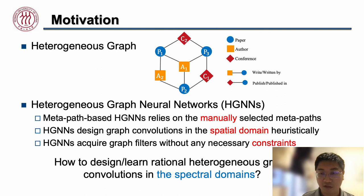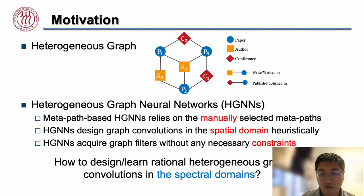Firstly, the efficiency of metapath-based methods heavily relies on manually selected metapaths. Moreover, the design of aggregation strategies and graph convolutions by these methods in the spatial domain is also heuristic, limiting their ability to learn expressive graph filters.